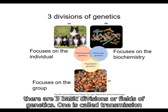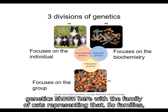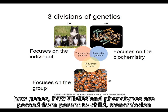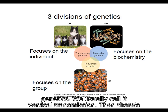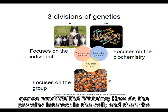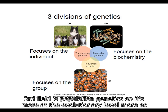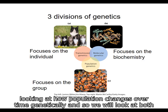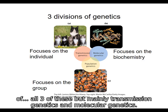There are three basic divisions or fields of genetics. The first is called transmission genetics, shown here with a family of cats — how alleles and phenotypes are passed from parent to child, which we usually call vertical transmission. Then there's molecular genetics, which focuses on the biochemistry of the molecules: how do the genes produce the proteins, and how do the proteins interact in the cell? The third field is population genetics, which looks at how a population changes over time genetically. We will look at all three, but mainly transmission genetics and molecular genetics.